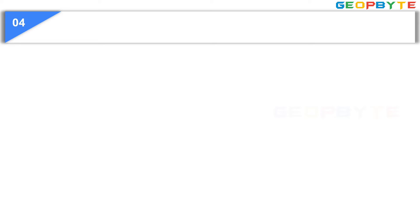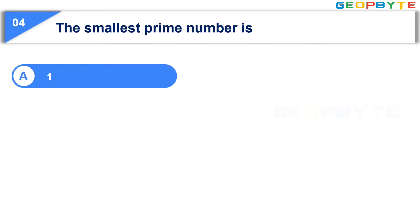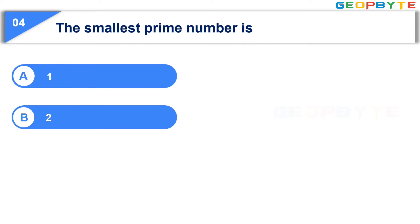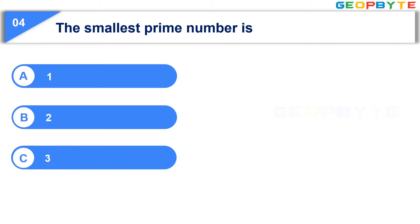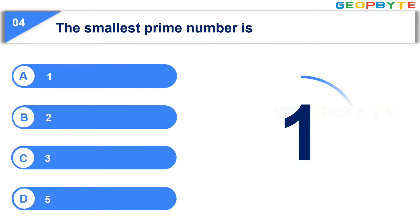Now, let us see the fourth question: The smallest prime number is — Option A: 1, Option B: 2, Option C: 3, Option D: 5. Your time starts now. Your time is up and the correct answer is Option B, 2.